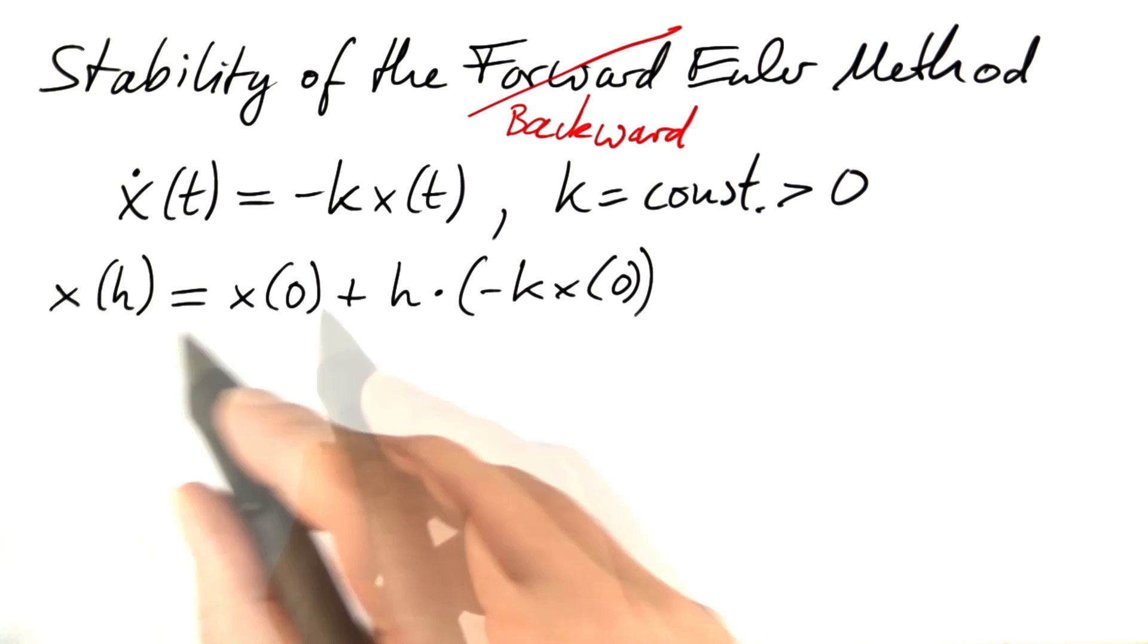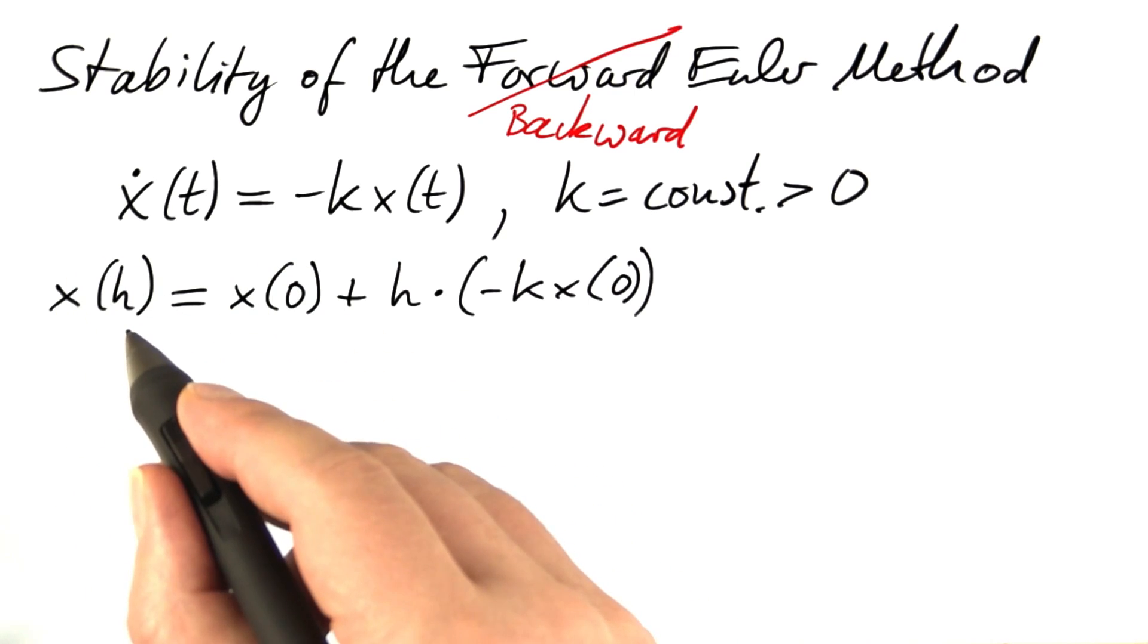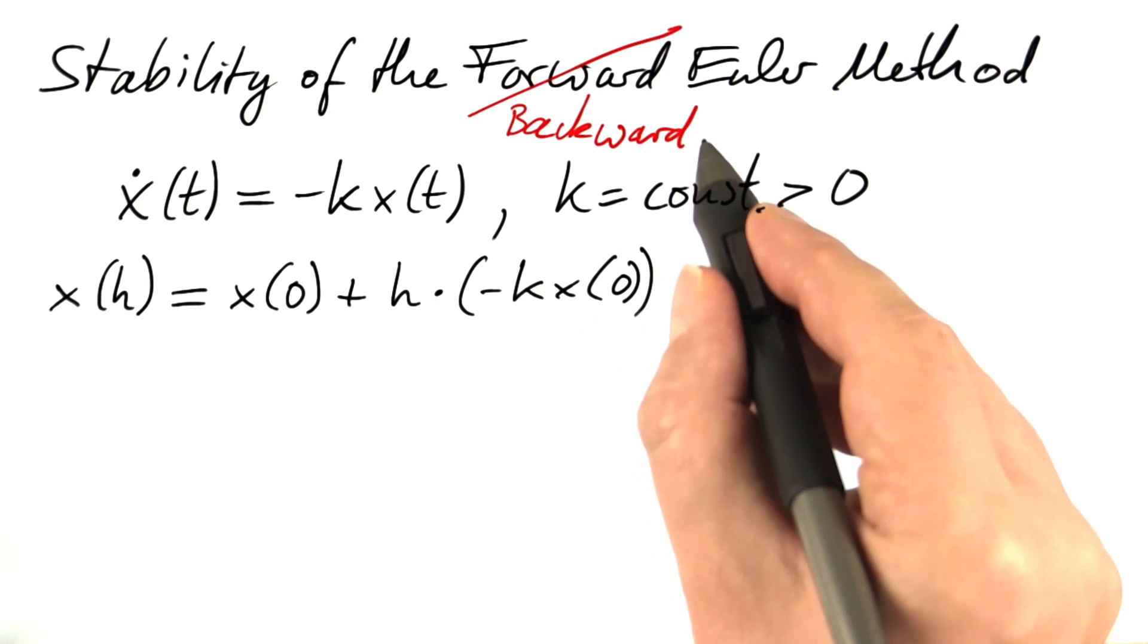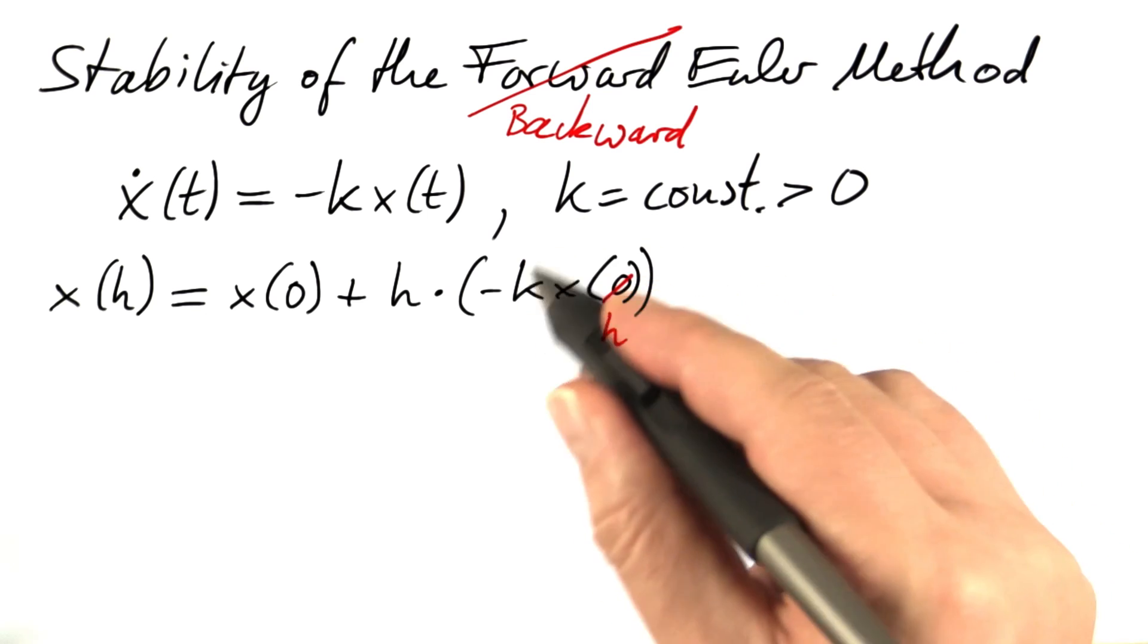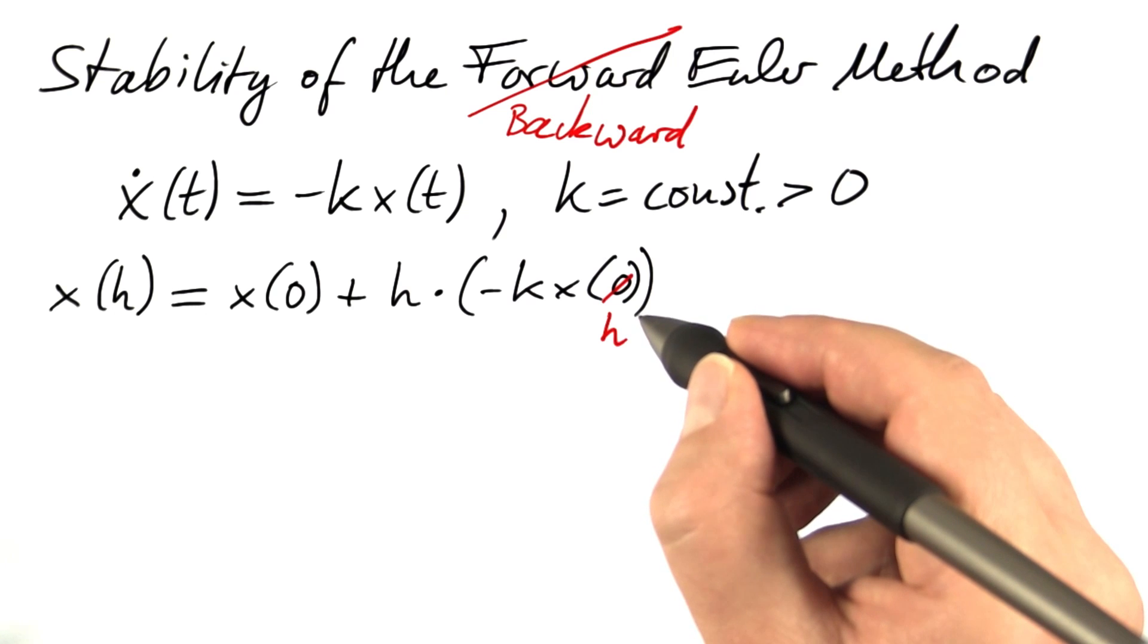The backward Euler method works like this. To go from the initial value of x to the value after the first step, it added the step size times the rate of change at time 0. The backward Euler method works with the rate of change at the end of the first step, x of h, actually our estimate of the rate of change at the end of the first step.